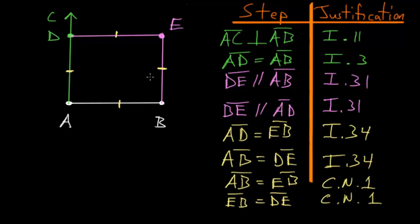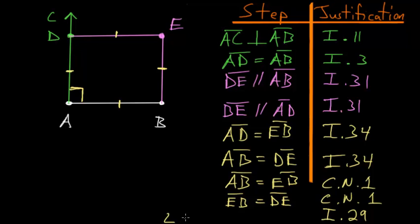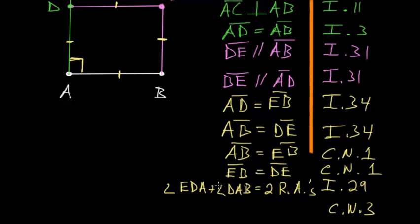To show that this four-sided shape is a square, we just need to prove all angles are right angles. We already know this angle is a right angle since we constructed AC to be perpendicular to AB. By Book 1, Proposition 29, with parallel lines DE and AB and transversal AD, the two interior angles — angle EDA plus angle DAB — must add up to two right angles. Subtracting angle DAB, which equals one right angle, gives us angle EDA equals one right angle.